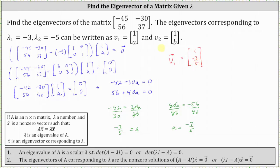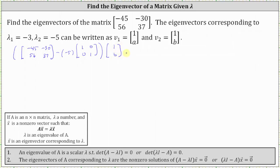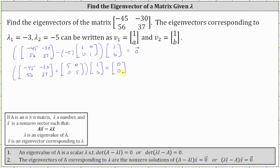Now we'll find the vector v sub 2, the eigenvector that corresponds to lambda equals negative 5. Setting up the same equation, we have the given matrix A minus lambda, where lambda is negative 5, so negative 5 times the 2 by 2 identity matrix, times the eigenvector v sub 2, which is the vector 1b, equals the zero vector. Let's write minus negative 5 times the identity matrix as plus the matrix 5, 0, 0, 5, and the zero vector as 0, 0. Summing the two matrices: negative 45 plus 5 is negative 40, negative 30 plus 0 is negative 30, 56 plus 0 is 56, and 37 plus 5 is 42. So we have the matrix negative 40, negative 30, 56, 42 times the vector 1b equals the vector 0, 0.